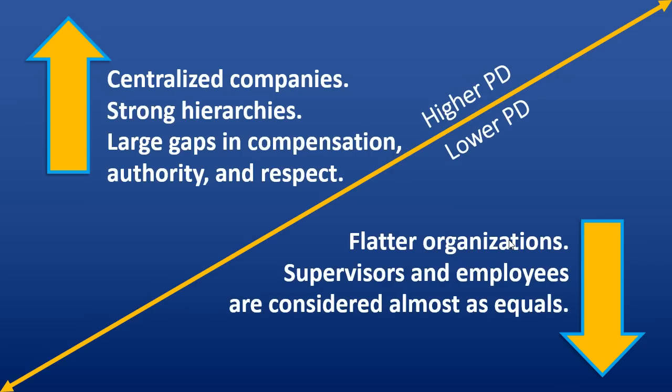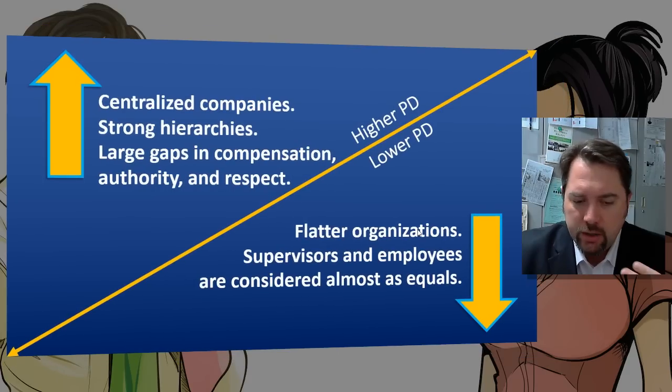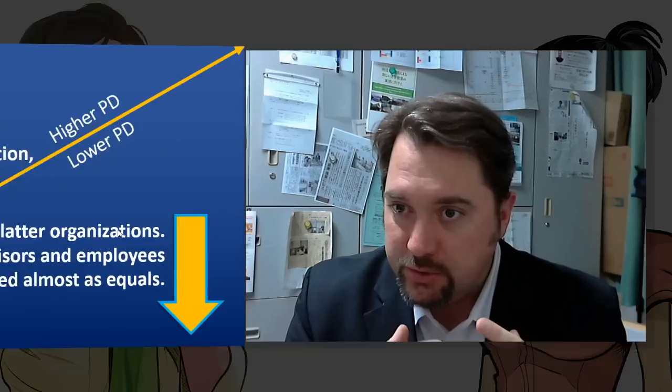A lower power distance score means a flatter organization, where supervisors and employees are considered more as equals and may receive more equal pay. Keep in mind that higher and lower scores aren't necessarily good or bad — they're just a ranking to show difference between two cultures. A high power distance score doesn't mean that the organization or country is better in any way.